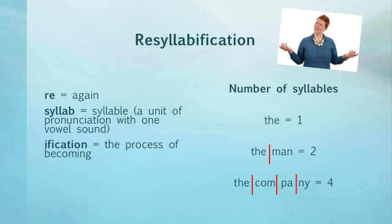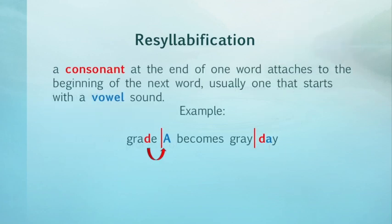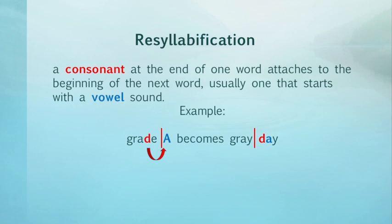Looking back at our example, a consonant at the end of one word — like the D in 'grade' — attaches to the beginning of the next word, usually one that starts with a vowel sound, like 'A'. So the D moves over and makes it sound like you're saying 'day' instead of 'A'. So 'grade A' becomes 'grade A'. There's often a very brief pause right before the consonant sound that shows this move and attaches the consonant to the next word, making it sound like part of that following word. This can be confusing for listeners because it can make it sound like two completely new words.